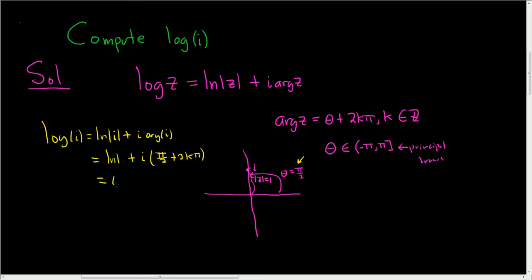And the natural log of 1 is 0 plus, and then we have i pi over 2 plus 2k pi. So this is equal to i pi over 2 plus 2k pi. And that's it.